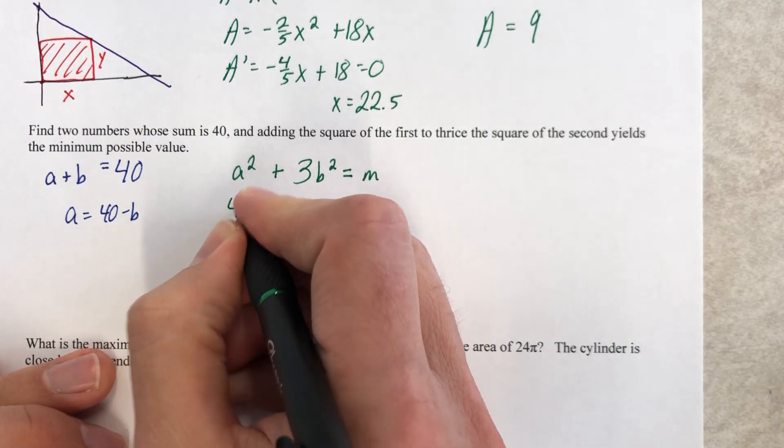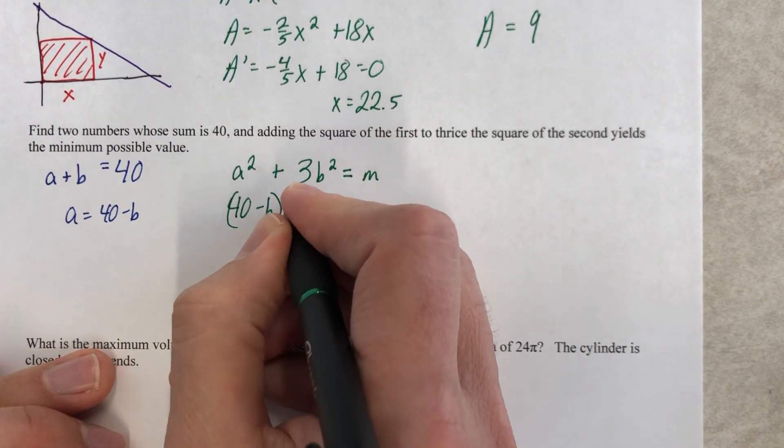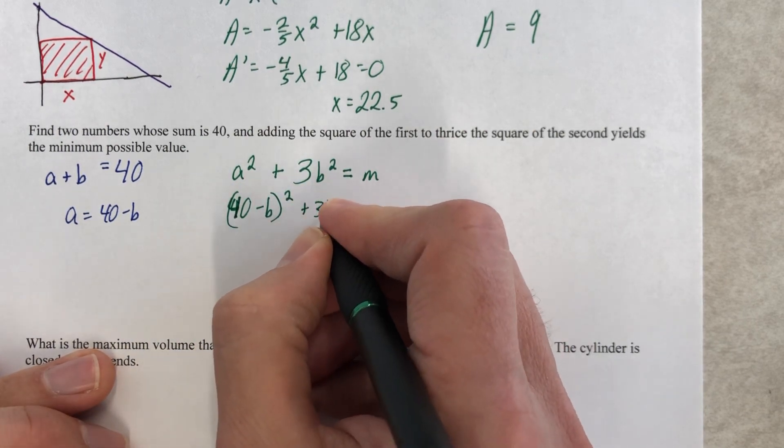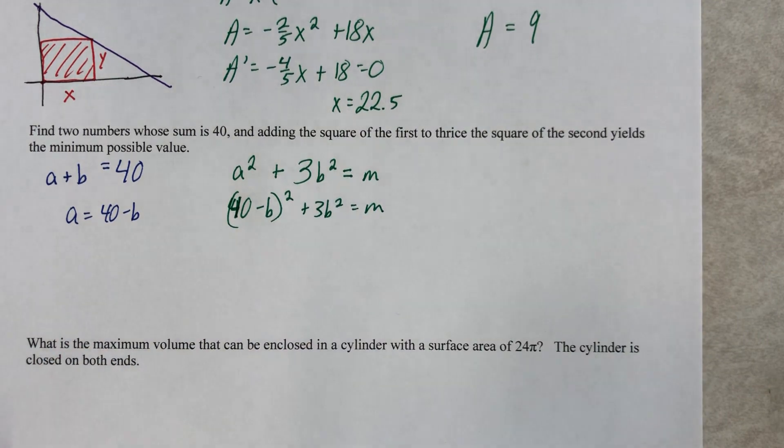And so we're gonna have 40 minus B, and it is squared. There we go. Plus 3B squared equals some minimum value. I don't know what the minimum value is. They actually didn't ask what that value was. Don't know. Who cares? But what I'm ready to do now is take a derivative.